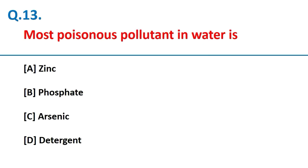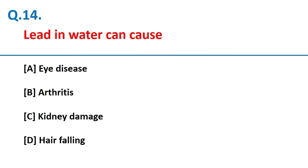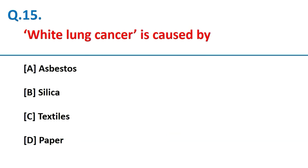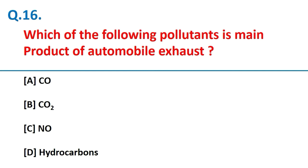The most poisonous pollutant in water is arsenic. Lead in water can cause kidney damage. White lung cancer is caused by asbestos. Which of the following pollutants is the main product of automobile exhaust? Nitric oxide.